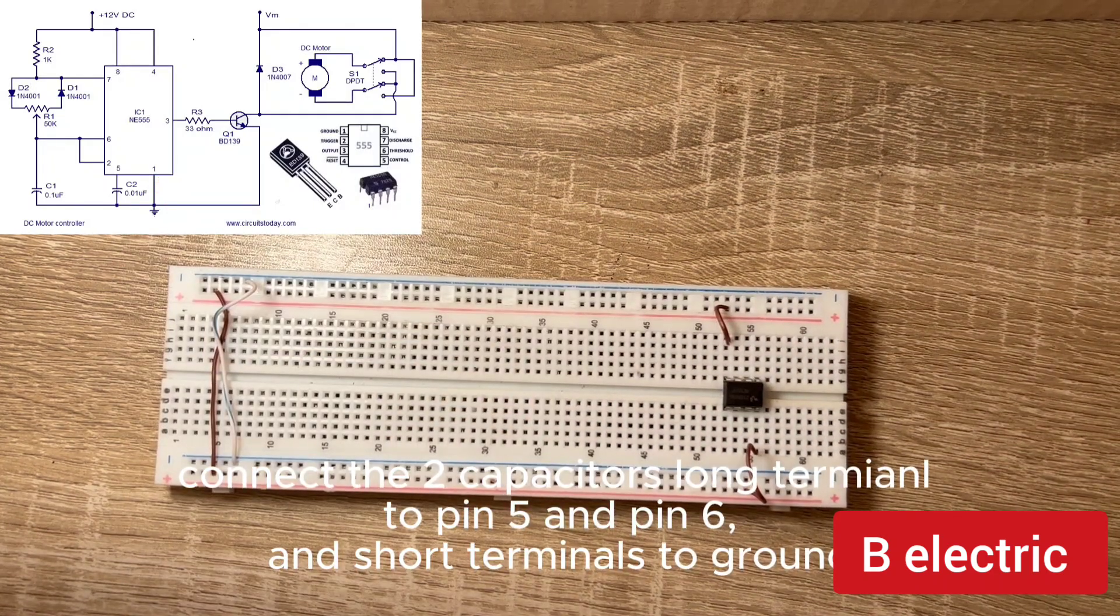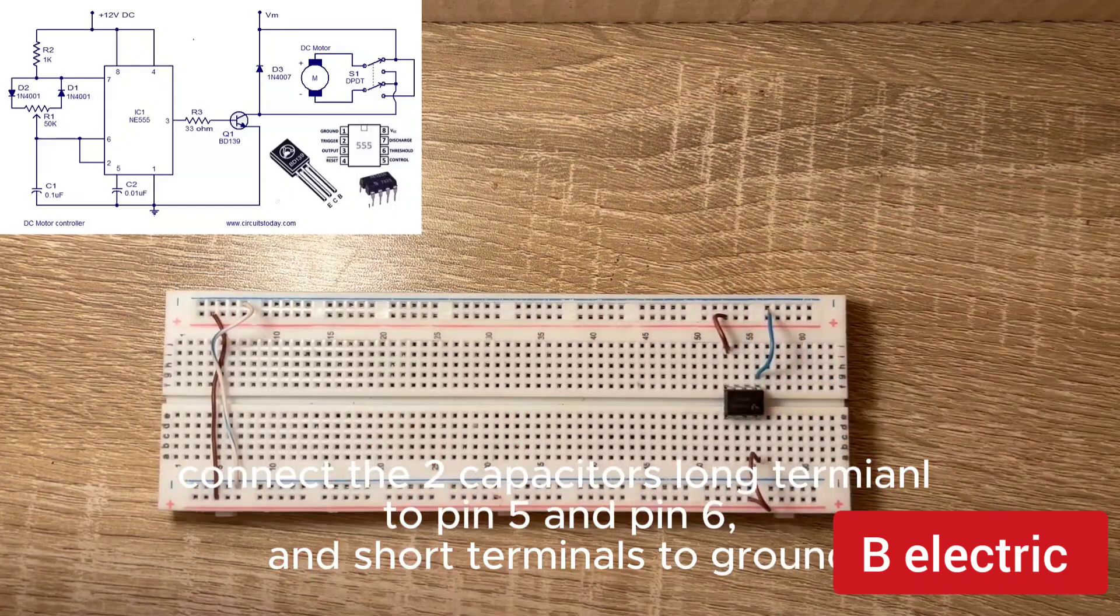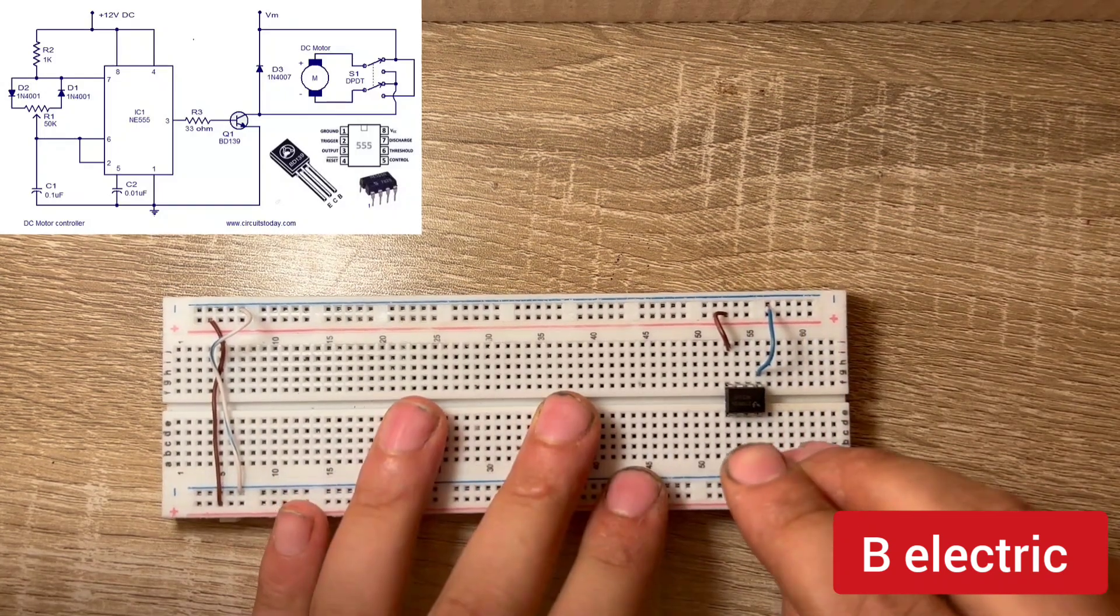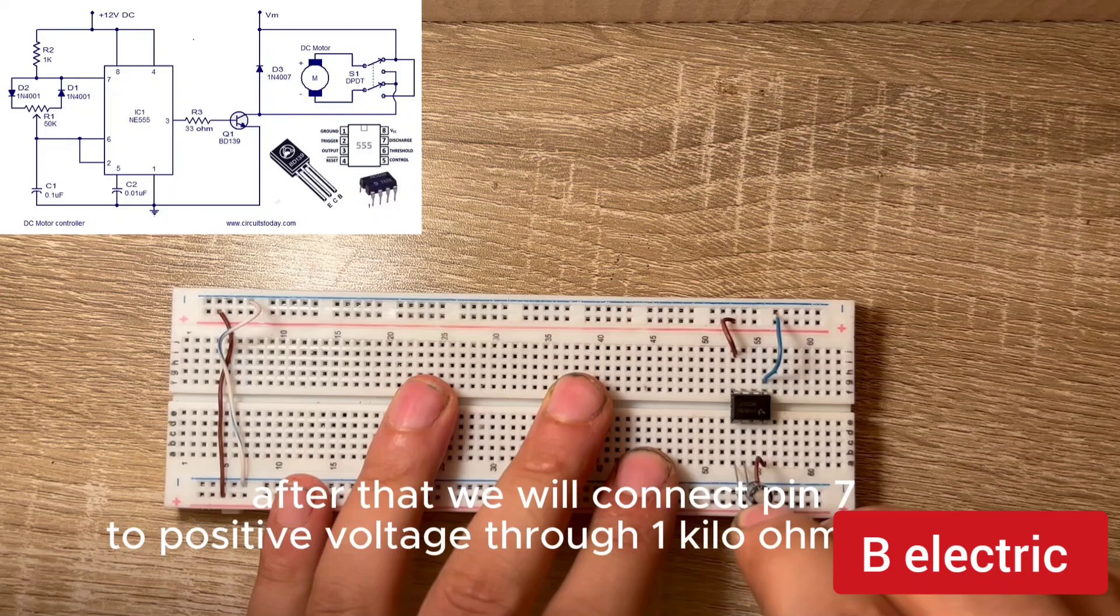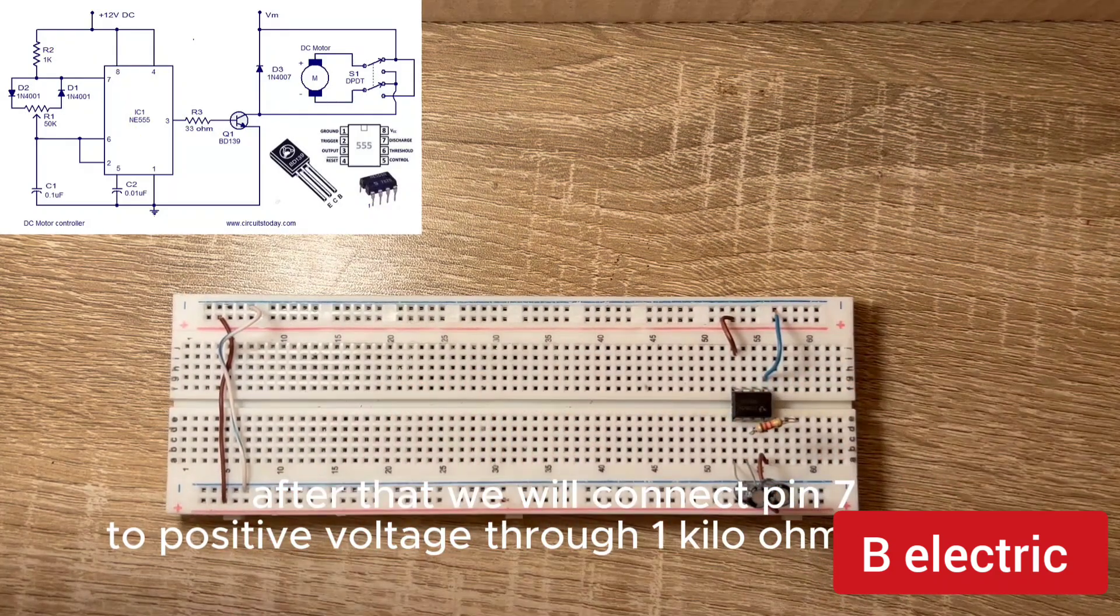Connect the two capacitors long terminals to pin 5 and pin 6, and short terminals to ground. After that we will connect pin 7 to positive voltage through 1 kilo ohm resistor.